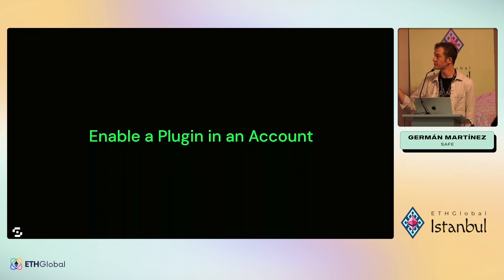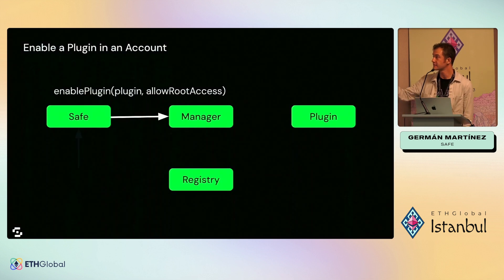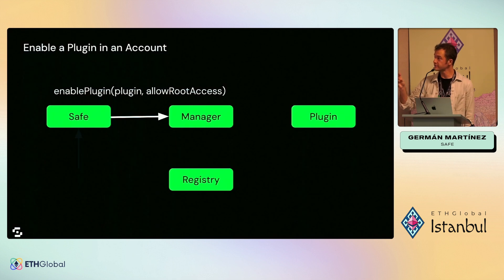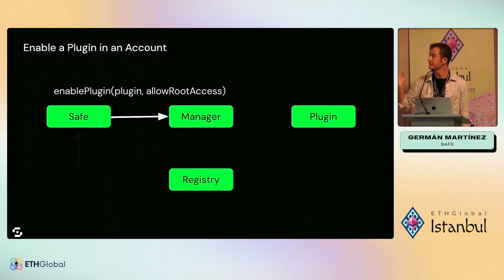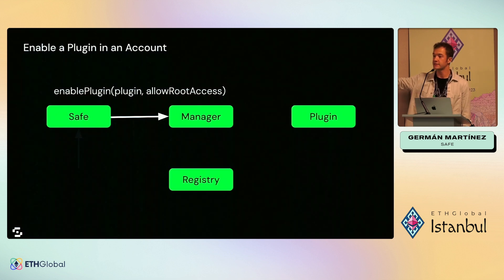As a user, to enable a plugin in your account, you will need to create a transaction from the SAFE that calls the manager — which needs to be enabled as a module — and execute the function `enable plugin` in the manager, passing the plugin address you want to enable and the boolean variable `allowed root access`. This variable can be true or false, and it specifies if the plugin will have certain permissions. For example, if the plugin will be able to execute delegate calls, or trigger transactions where the destination is the manager or the SAFE.